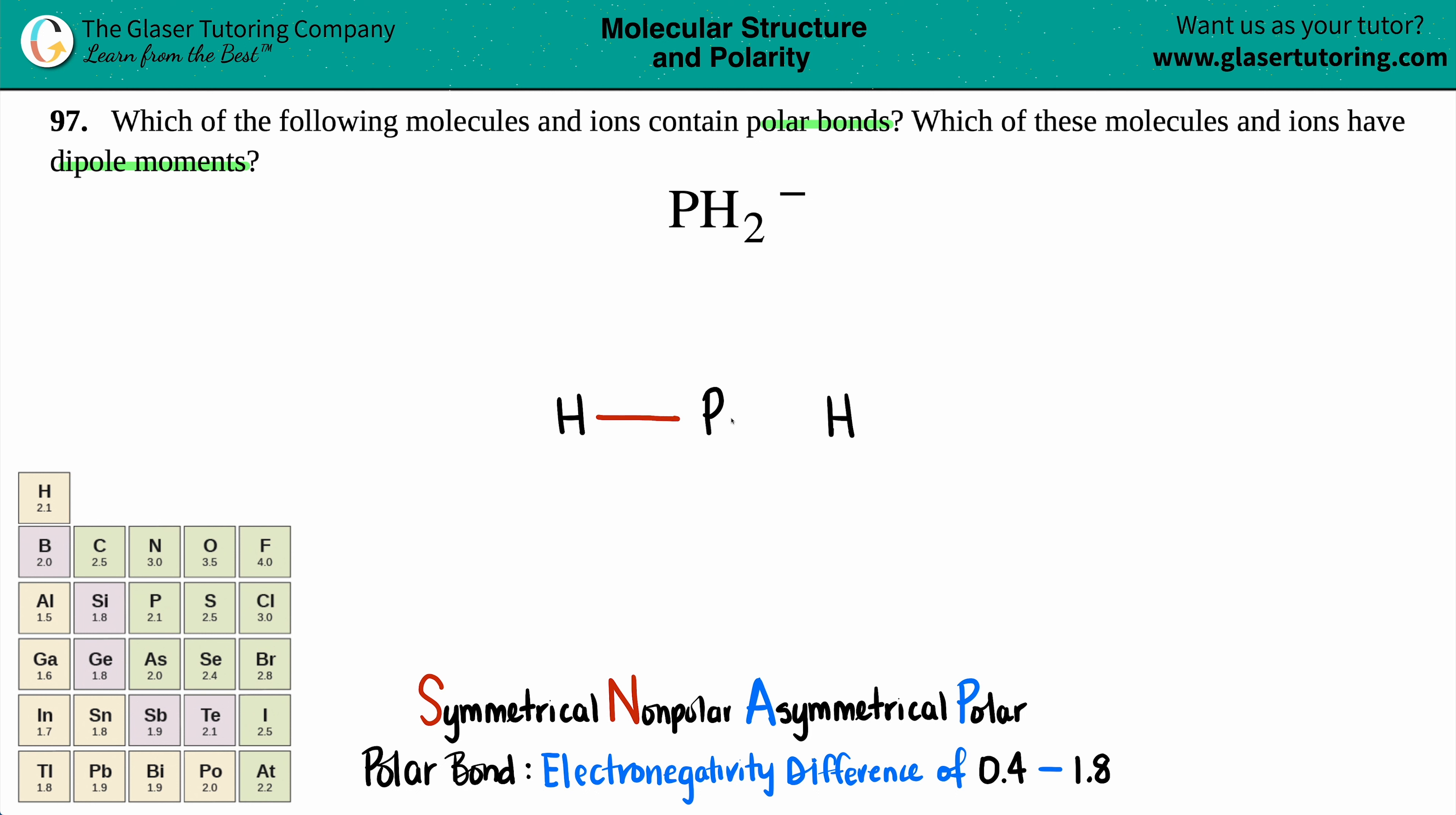Each hydrogen can only have a single bond. So that's good to go. We have to give the phosphorus two lone pairs to get the octet rule. And now we're good. So I'll just bracket it off and put that negative charge up top. Done.